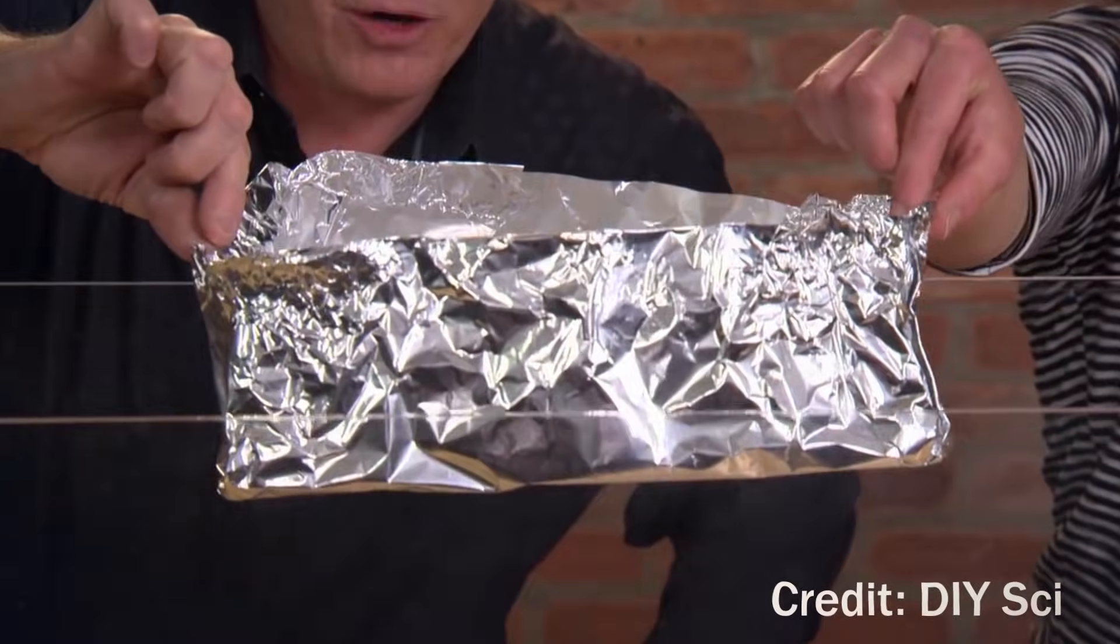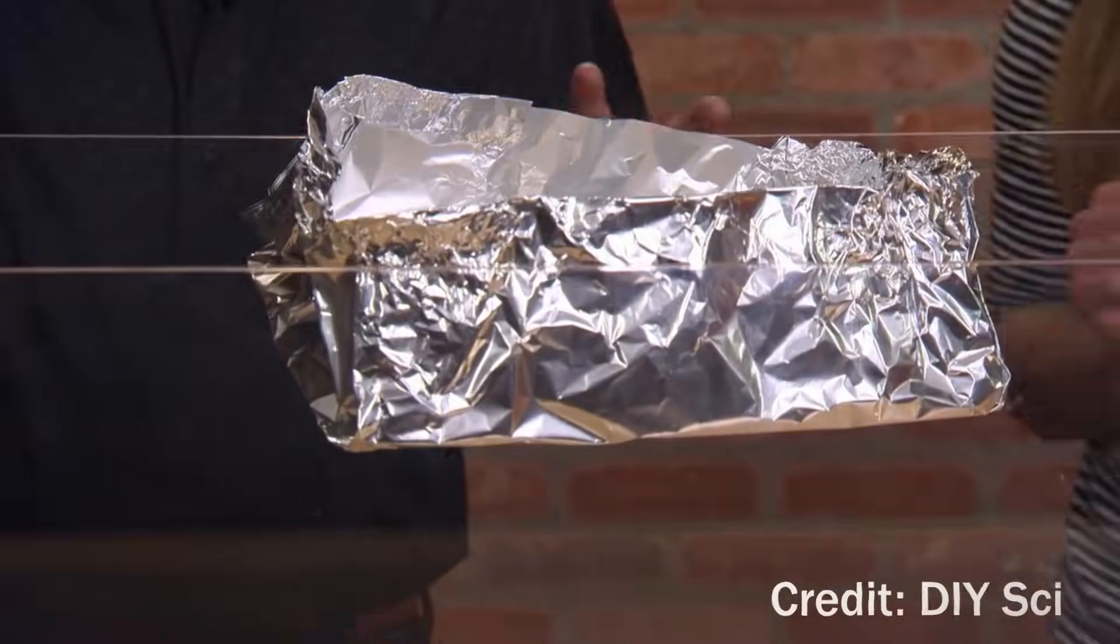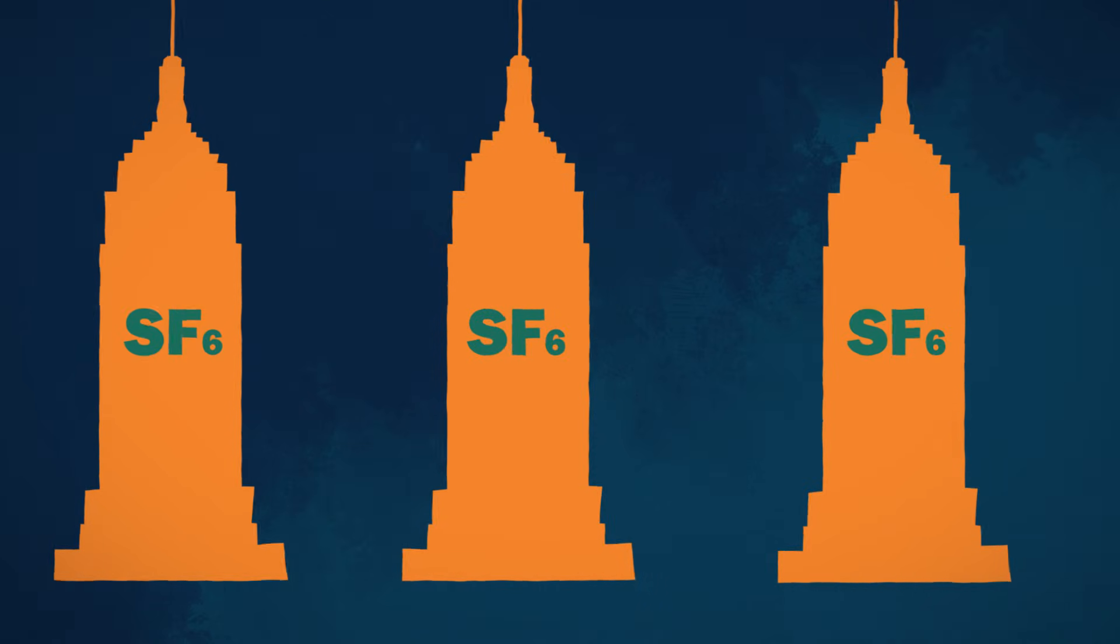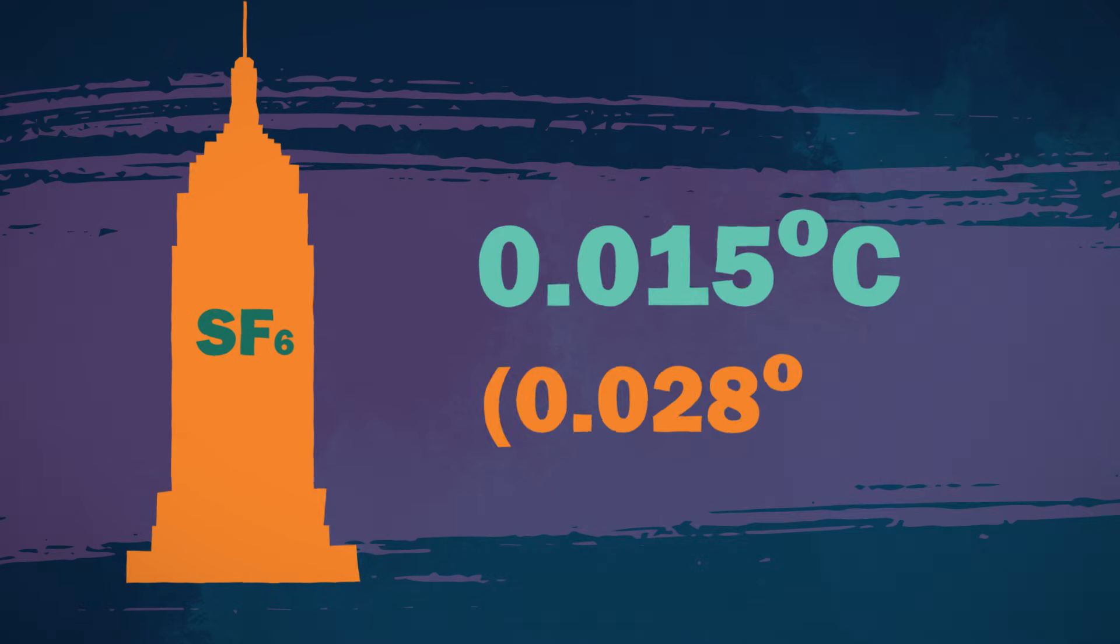It's one of the heaviest gases, so you can actually float a tinfoil boat on it. If we released a million tons of it, the weight of just a few skyscrapers, Earth's surface would heat up by about one one-hundredth of a degree Celsius over the next hundred years.